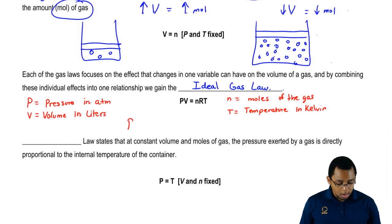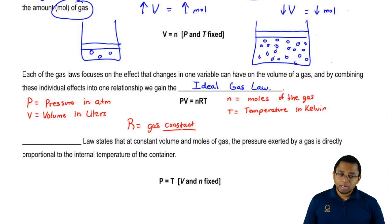And here R, R equals our gas constant. From the name gas constant, it means that it's a constant number. So it's going to be up to you guys to remember what that constant number is. R equals 0.08206 and the units are liters times atmospheres over moles times K.